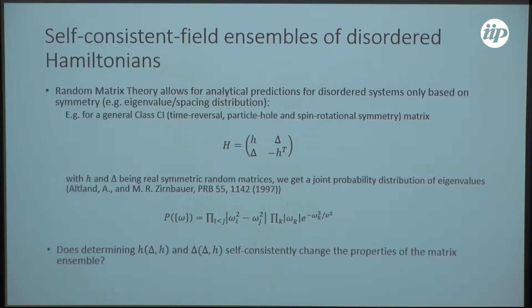If we start from this C1 ensemble and only take the physically relevant sub-ensemble of the self-consistent matrices, does that change the predictions of random matrix theory?